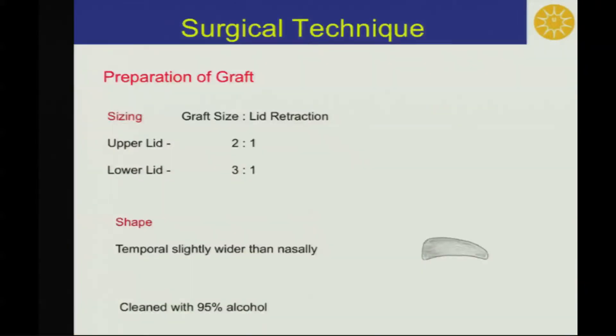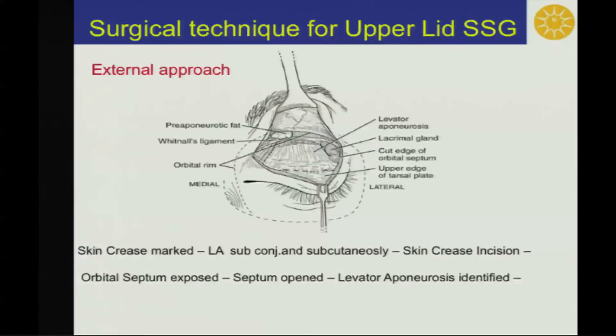For the upper lid, graft size is usually twice the lid retraction, and for the lower lid, it is usually thrice the lower lid retraction. The shape of the graft is temporally slightly wider than nasally.